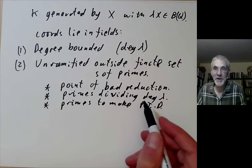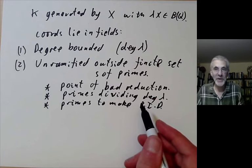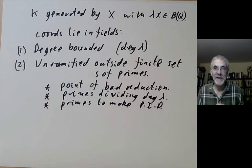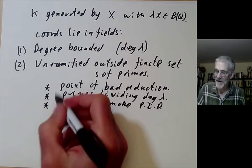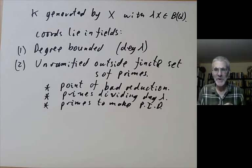Then we want primes to make various rings into principal ideal domains. If you've got the ring of integers of an algebraic number field, it's not usually a principal ideal domain, but you can make it into a principal ideal domain just by localizing at a few primes. So you add in all these. This gives you a finite collection of bad primes. You are probably throwing in the prime two as well, because the prime two always goes wrong.